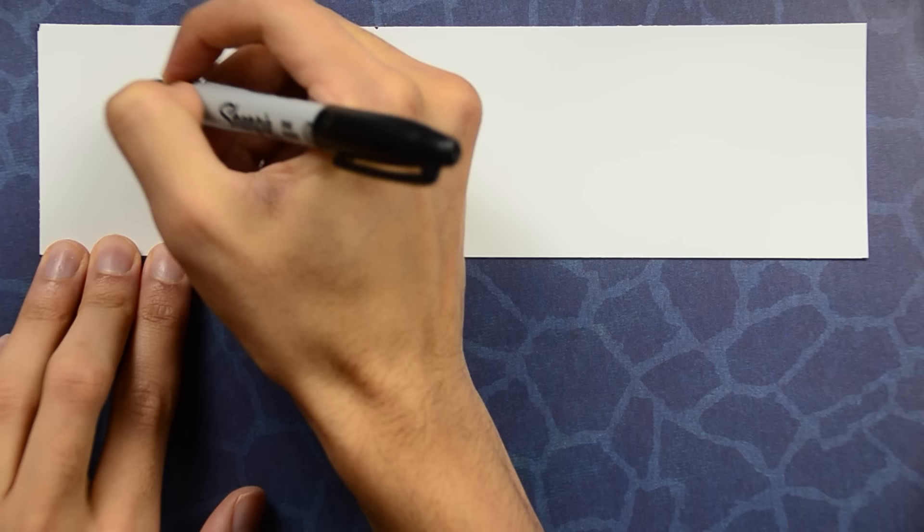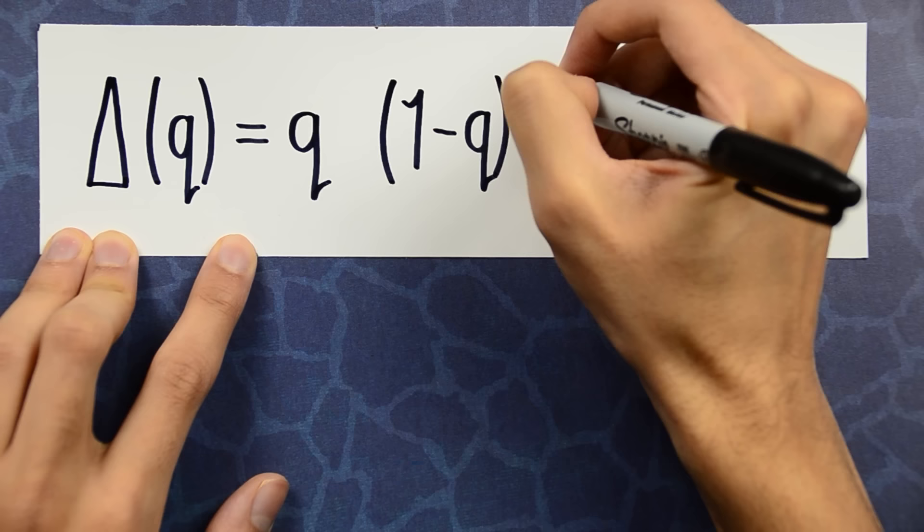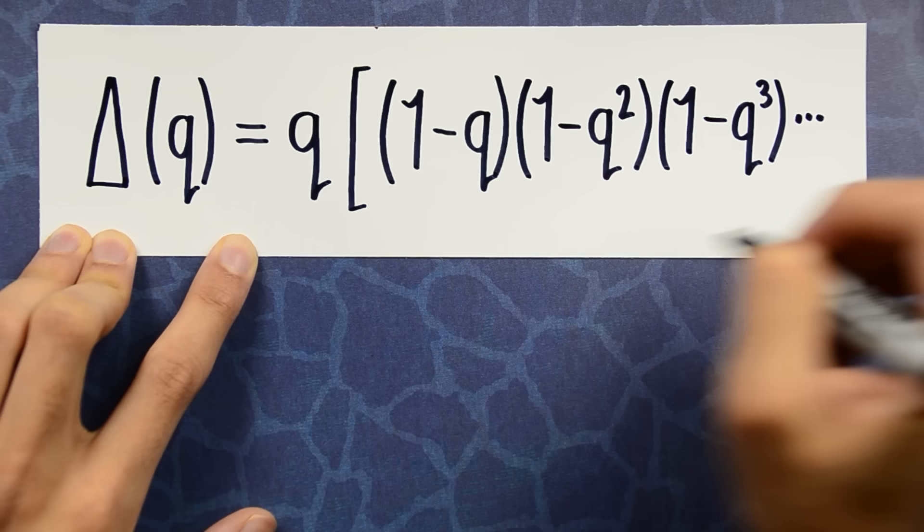In 1916, the mathematician Ramanujan looked at the following very strange function, which he called delta of q: q times (1-q) times (1-q²) times (1-q³) and on and on, and then all of this raised to the 24th power.